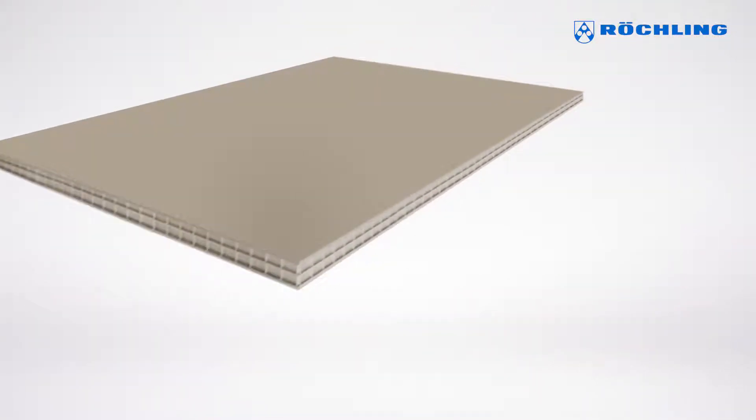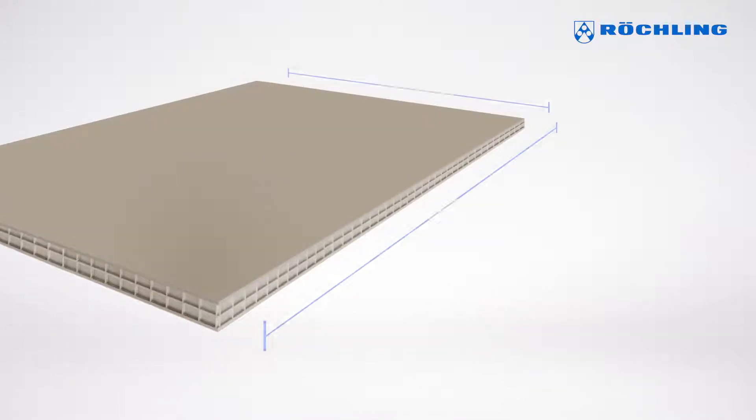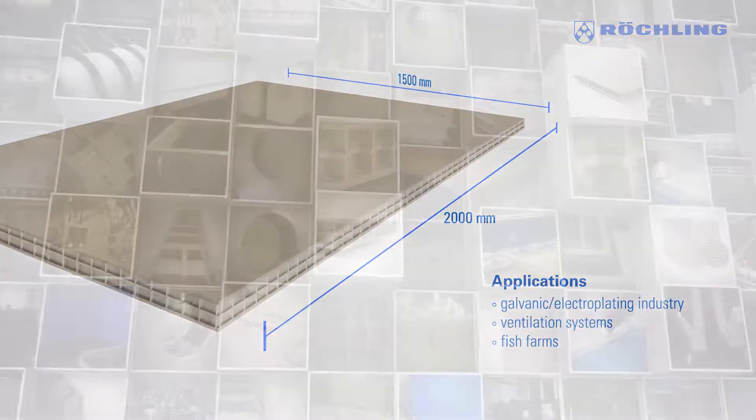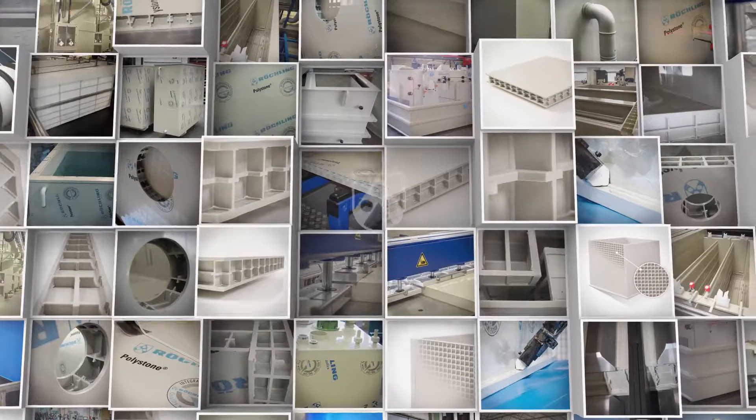The handy 2x1.5m sheet format is ideal, enabling the simple production of rectangular tanks and installations for the galvanic industry, ventilation systems, fish farming, and many other applications.